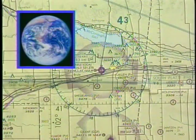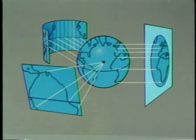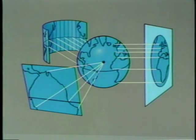There are many problems associated with trying to portray a spherical object, such as the Earth, in chart form. When we try to flatten any spherical object, distortions occur. Over the years, several charting techniques called projections have been developed to minimize these distortions and inaccuracies.